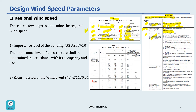Examples for importance level three include facilities with more than 300 people, daycare facilities, primary schools, colleges, healthcare facilities, airport terminals, multi-occupancy residential and commercial buildings, and public assembly buildings — mainly crowd-based occupancies. Importance level four is for structures with special post-disaster functions, and level five is for special structures with special functions. As our building is a warehouse, our importance level is number two.